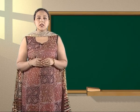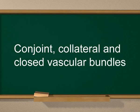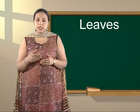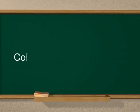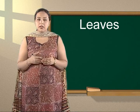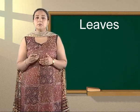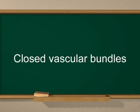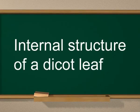Let us clarify what conjoint, collateral and closed vascular bundles mean. If the xylem and phloem tissues are present on the same radius and just opposite to each other, then the vascular bundles are said to be conjoint. Collateral vascular bundles refer to the presence of one patch of phloem towards the outer side and one patch of xylem towards the inner side. If a strip of cambium is absent between phloem and xylem patches, then the vascular bundles are said to be closed.